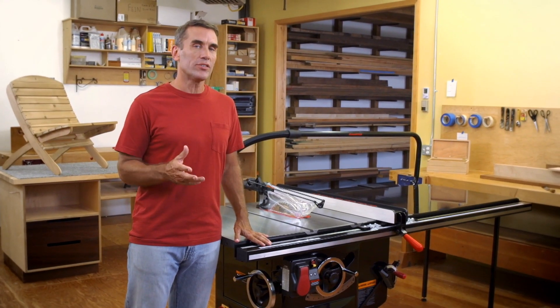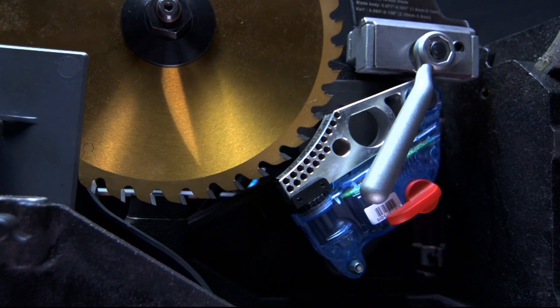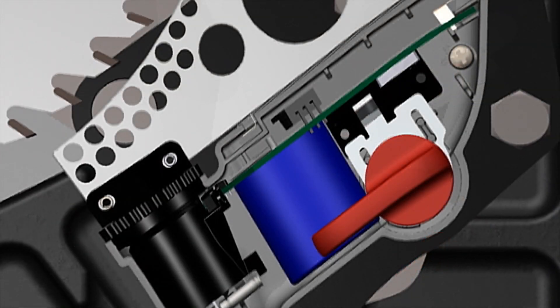When the saw is on, it's constantly on the lookout for change. Each SawStop saw has a brake cartridge just underneath the blade. And through the arbor, the saw introduces a small electrical signal onto the blade.